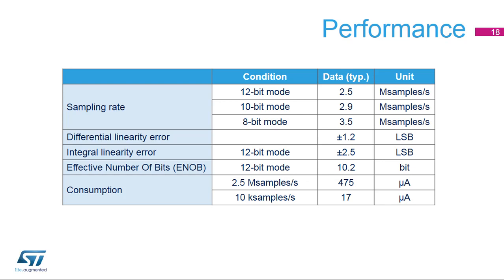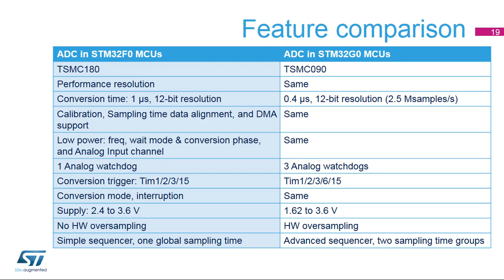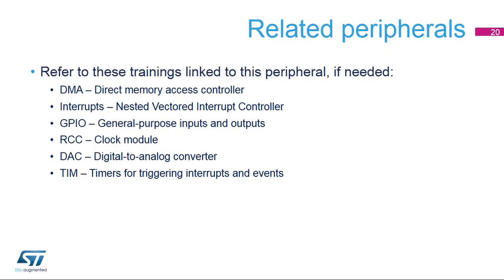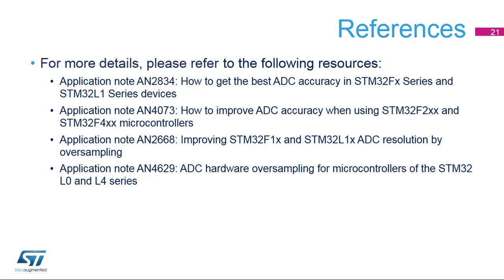The following table shows performance parameters for the ADC; all values are preliminary. This table summarises the differences between the STM32F0 ADC and the STM32G0 ADC. These peripherals may need to be specifically configured for correct use with the ADCs — please refer to the corresponding peripheral training modules for more information. Several application notes dedicated to analog to digital converters are available to learn more about ADCs.